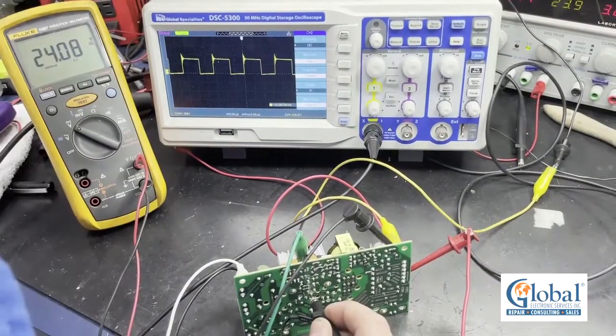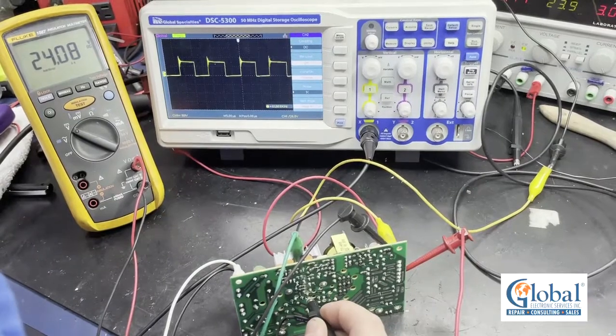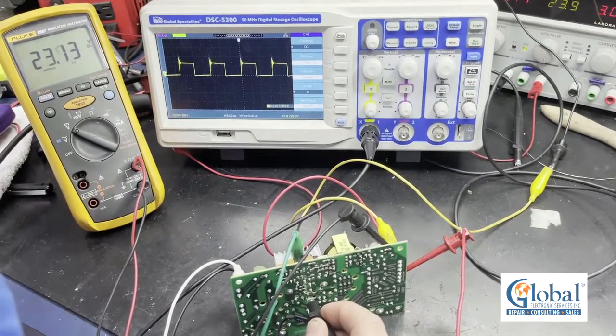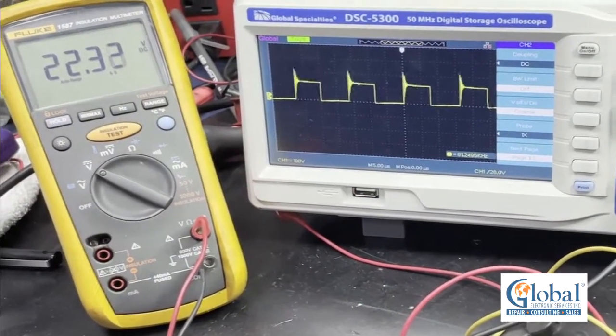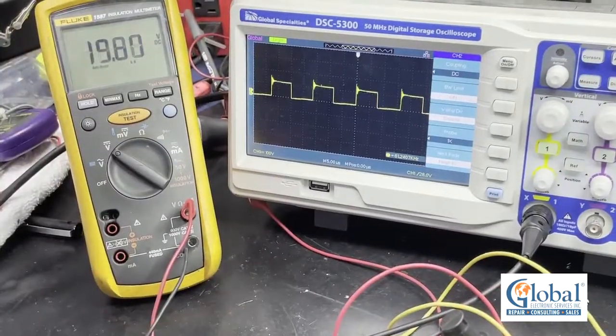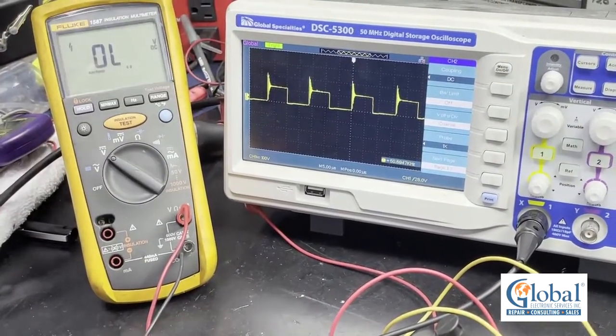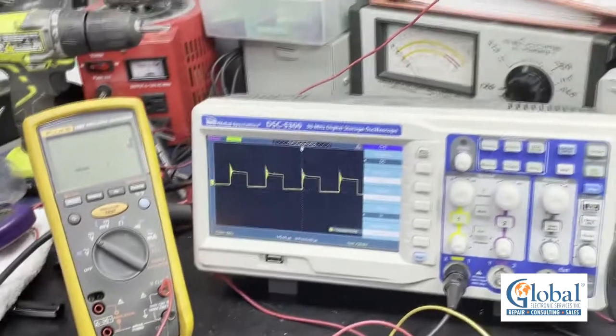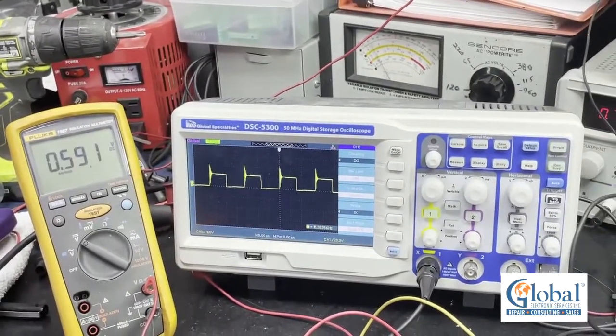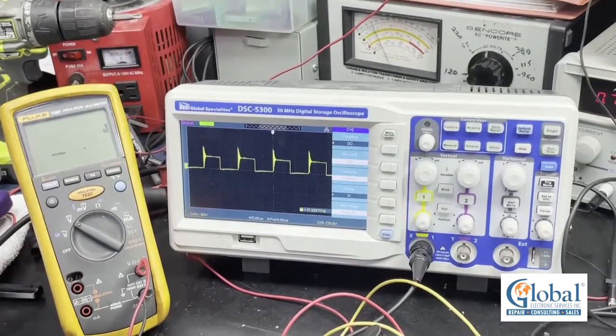If too much load is applied or the circuit is overloaded, the waveform becomes irregular and the voltage begins to drop out. The power supply will not be able to provide an output voltage if this happens. This is why you should make sure your repaired power supplies get load tested.